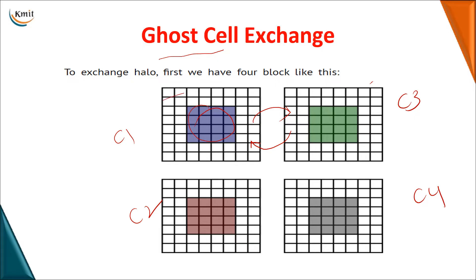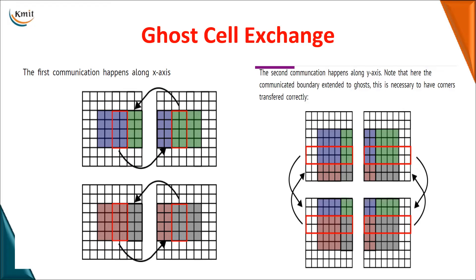Around the actual data, we have empty cells which we call hollows. These empty cells are used for exchanging data from one core to another. There are four different processes executing on four different cores, shown with different color representations. Now let's see an example of how the exchange is done.